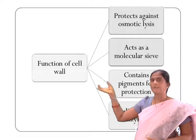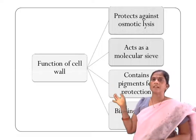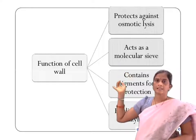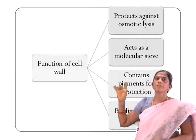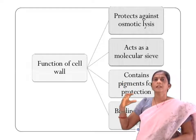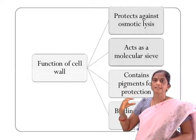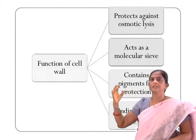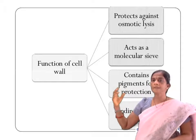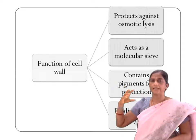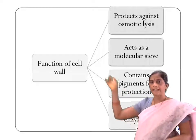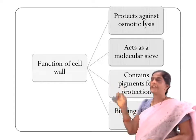Here we can see the functions of the cell wall. It protects against osmotic lysis. It acts as a molecular sieve. It contains pigments for the protection of the fungi. The cell wall also provides a binding site for enzymes.